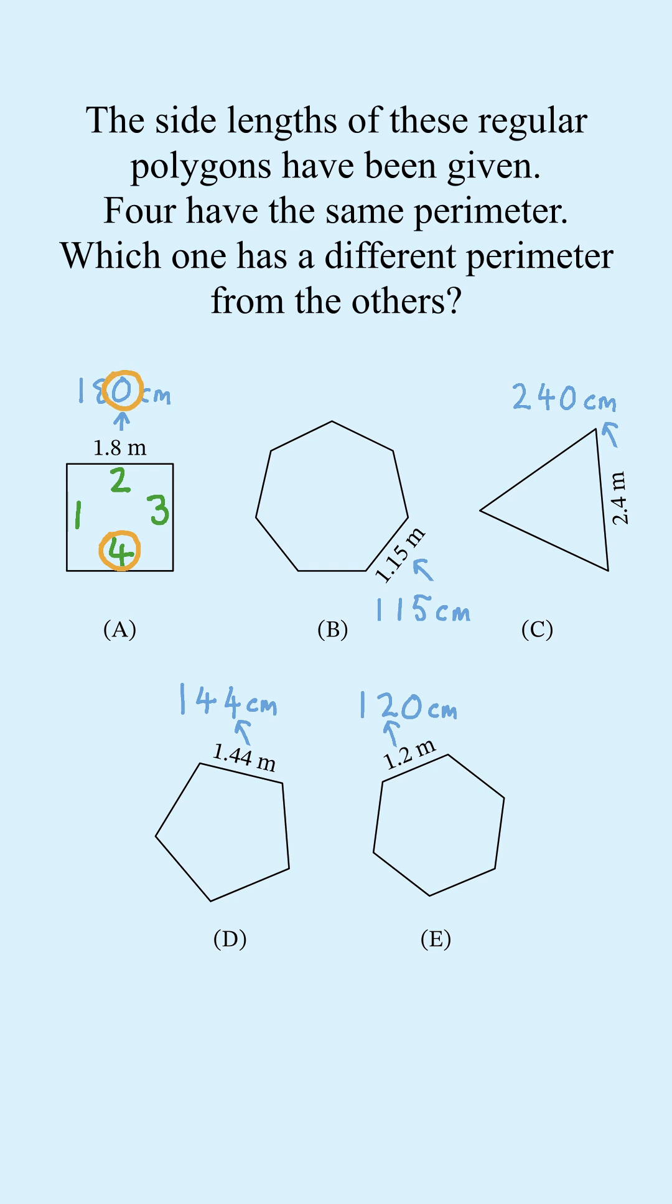Polygon A has four sides of 180 centimetres, so the last digit of the perimeter comes from 4 times 0, which is 0.